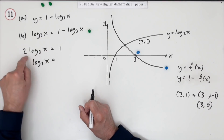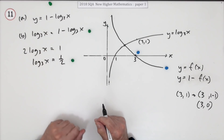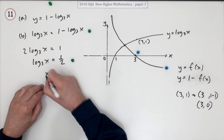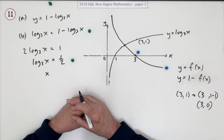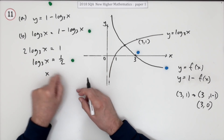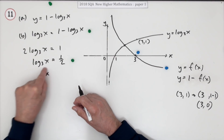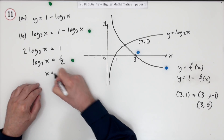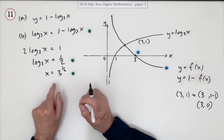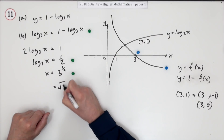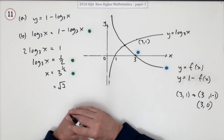You have a choice: you could pop that 2 inside as a square, but it's safer to leave the 2 outside. Divide both sides by 2 — that's one step and earns a mark, giving log base 3 of x equals a half. Now get rid of the log. The inverse of log base 3 is 3 to the power, so the answer is 3 to the power of a half, which you could rewrite as root 3. There's no need to state x greater than 0 as that's already implied by the graph.